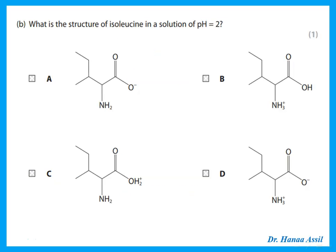What is the structure of isoleucine at pH 2? At low (acidic) pH, the carboxylic acid group is fully protonated as –COOH, and the amine group has an H⁺ added to it, giving –NH₃⁺. That is the structure of an amino acid at low pH.